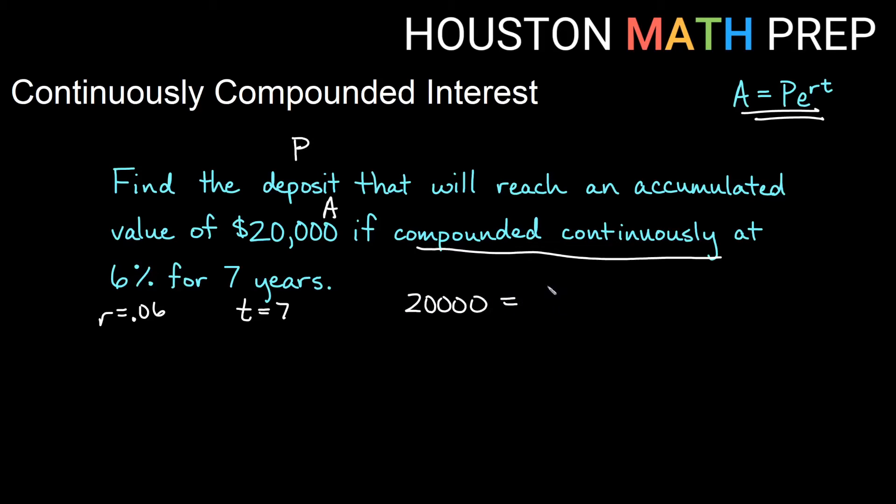So if we plug this information to our A equals Pert equation, we get 20,000 for A this time equals, we're solving for P, so that stays in the formula, times e to the 0.06 times seven. Now you'll notice here that what we're solving for is not by itself on one side of the equation. So we need to get it by itself. So to solve this equation for P, I'm going to go ahead and divide by the stuff over here with P so we don't have this anymore. So I do that on this side. I'm going to go ahead and do that on this side as well. So e to the 0.06 times seven is what I will divide my 20,000 by. So now I just have P equals this. If we type this into our calculator, 20,000 divided by e to the 0.06 times seven. And again, make sure you put your 0.06 times seven in parentheses, and we round to the nearest cent, then we will get $13,140.94.